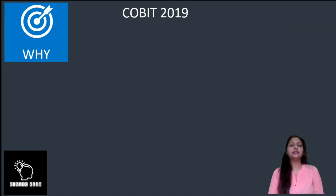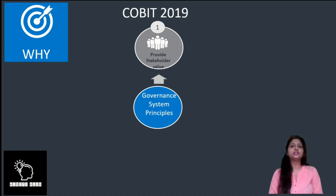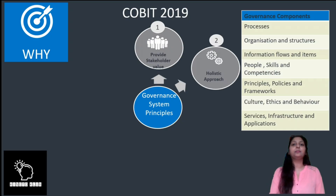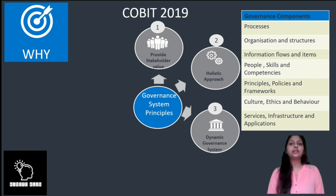Why do we need to learn about COBIT 2019? As mentioned in its governance system principles, it provides stakeholder value by translating stakeholder needs into specific, actionable, and customised goals in the context of the enterprise. COBIT also provides a holistic approach covering governance components — whether it be processes, organisational structure, information flow, or whether people are skilled and competent. It also features a dynamic governance system.